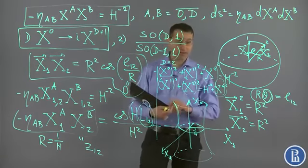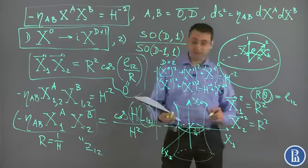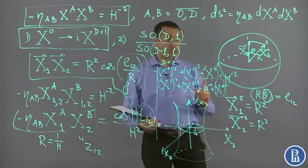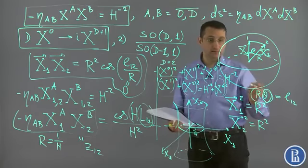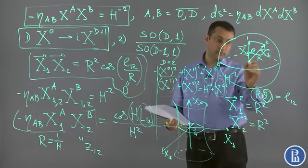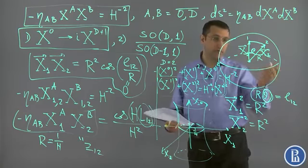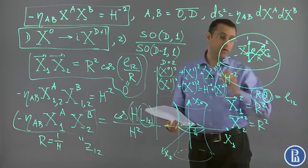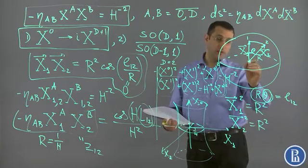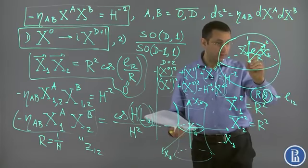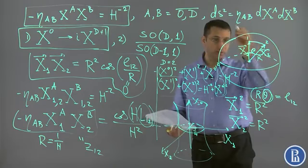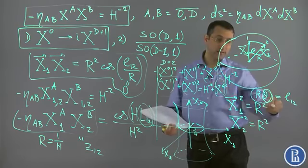One last thing I have to say is: how do we obtain geodesics on the sphere? We take a plane which passes through the origin. Suppose we want to find a geodesic between point one and two. We take a plane which goes through these three points—this one, this two, and the origin. There is a unique plane.